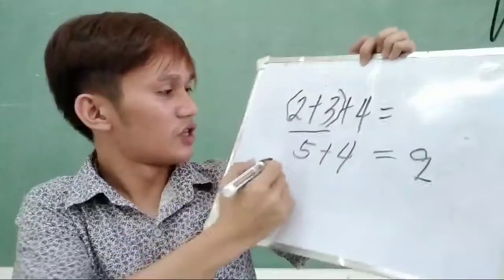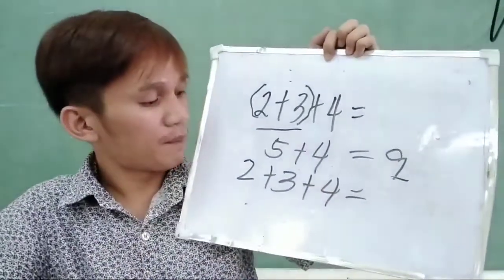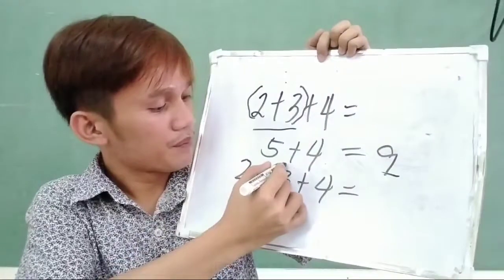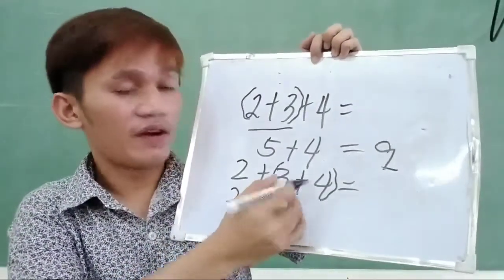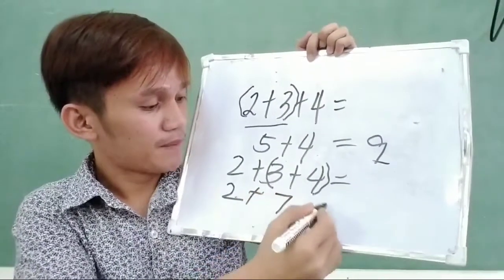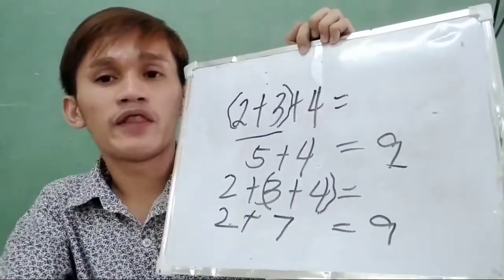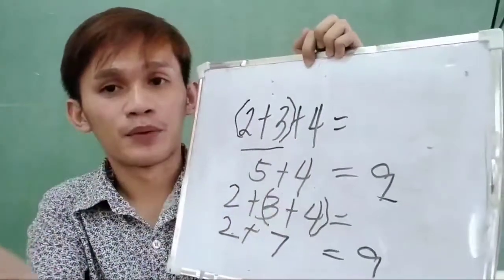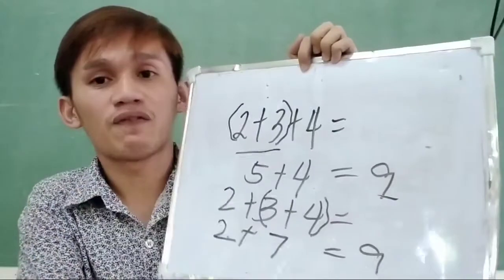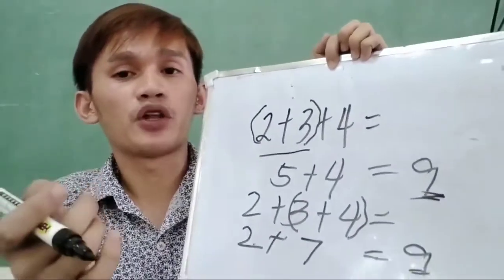So let us now change the groupings. This will be 2 plus (3 plus 4). This time, the numbers that we are going to group will be 3 and 4. So 3 plus 4 is 7, and 2 plus 7 is also 9. So it does not affect the sum, whether you group the first two numbers or the second and third numbers. It will always be the same. And that is the associative property of addition.